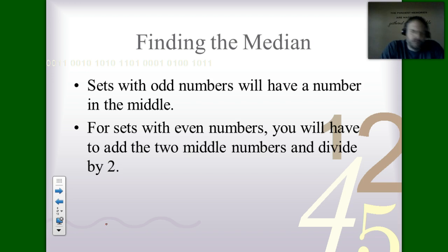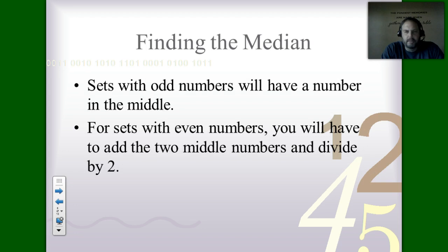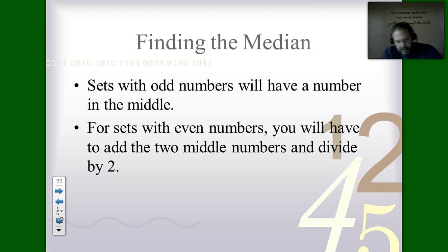With sets with an odd number of values, you'll have exactly one number in the middle. With sets with an even number of values there's a small complication — when you cross off all the outside numbers you'll wind up with two numbers in the middle. When that happens, add those two middle numbers together and divide by two. Essentially you're finding the average of those two middle numbers.